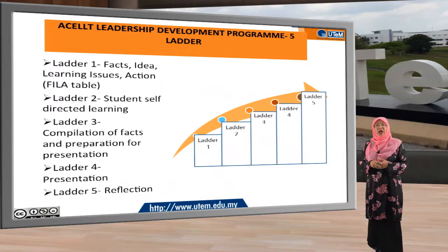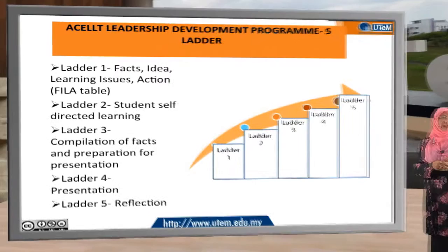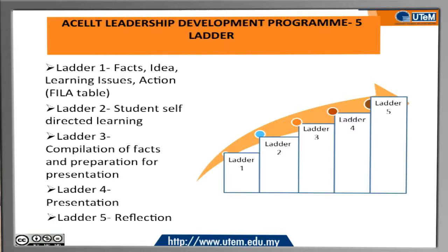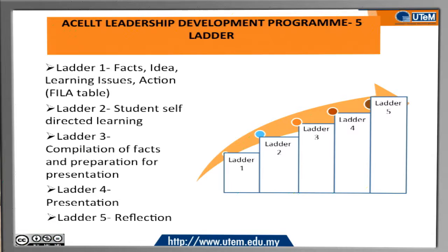How do you do PBL? The Excel Leadership Development Program promotes a five-step process. Step one involves the FILA table — an acronym where F stands for Facts, I for Ideas, L for Learning Issues, and A for Actions. Step two is student self-directed learning, where students look for information in the library, other places, or through internet searches. Step three is compilation of facts and preparation for presentation, where students come together in groups and compile all gathered information. Step four is the actual presentation. Step five requires all students in the group to do a reflection on the learning process.